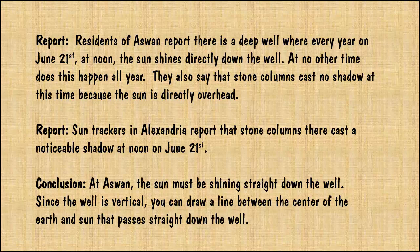He was already convinced the earth was a sphere, so this event in Aswan meant that at high noon, he could draw a straight line between the sun, the well, and the center of the earth itself. He checked the sun records for Alexandria, a town 524 miles north of Aswan. They reported the stone columns there cast a noticeable shadow on June 21. He started thinking about why this might be.